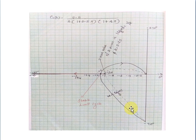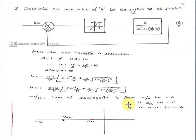Next question: Determine the maximum value of K for the system to be stable. The nonlinearity is saturation with S equal to 1 and k equal to 10. So K equals 10 by S, that is 10 by 1, equal to 10. Substituting into the KN equation: KN equals (2×10/π) into [sin inverse(1/X) plus (1/X) into root(1 minus (1/X)²)].